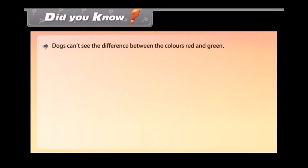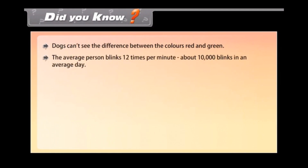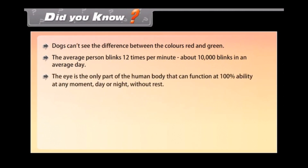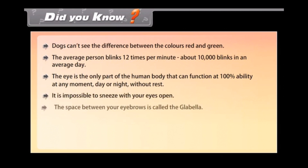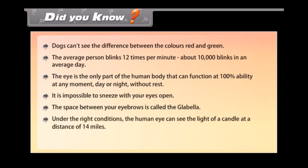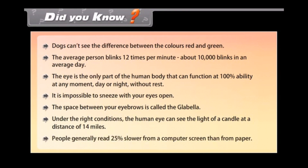Dogs cannot see the difference between red and green. The average person blinks 12 times per minute — about 10,000 blinks in an average day. The eye is the only part of the human body that can function at 100% ability at any moment, day or night, without rest. It is impossible to sneeze with your eyes open. The space between your eyebrows is called the glabella. Under the right conditions, the human eye can see the light of a candle at a distance of 14 miles. People generally read 25% slower from a computer screen than from paper.